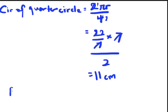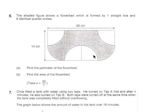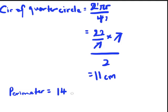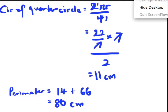So the perimeter is simple. The perimeter equals to 14, which is the line over here, plus 6 times 11, which is 66. And the answer is 80 cm. Very simple. So that is for part A. And let's move on to part B.